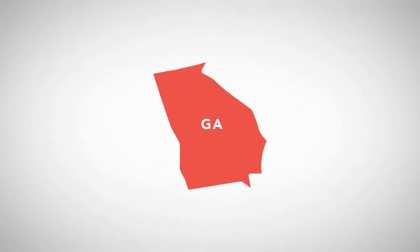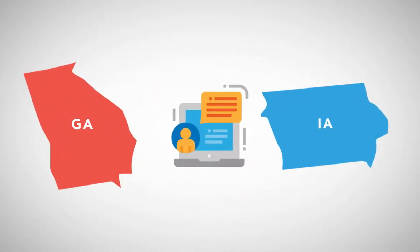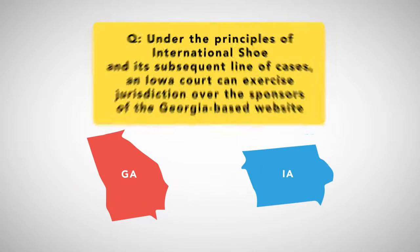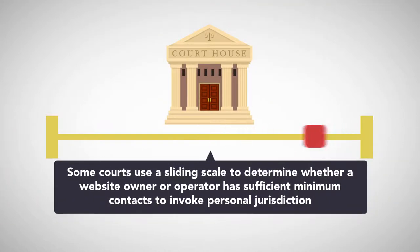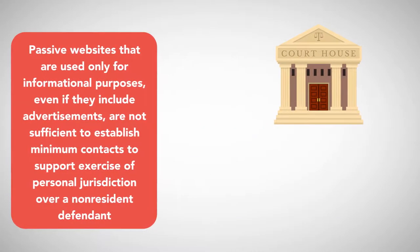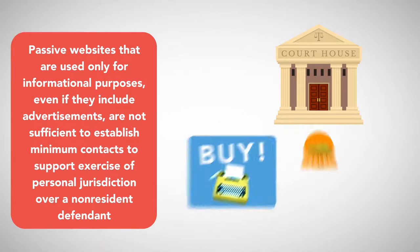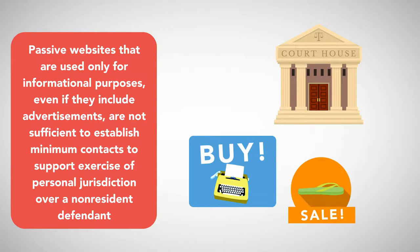If a website written and hosted in Georgia posts false information that a user in Iowa relies on to her detriment, the question becomes whether, under the principles of International Shoe and its subsequent line of cases, an Iowa court can exercise jurisdiction over the sponsors of the Georgia-based website. Some courts use a sliding scale to determine whether a website owner or operator has sufficient minimum contacts. Courts have held that passive websites used only for informational purposes, even if they include advertisements, are not sufficient to establish minimum contacts to support exercise of personal jurisdiction over a non-resident defendant.